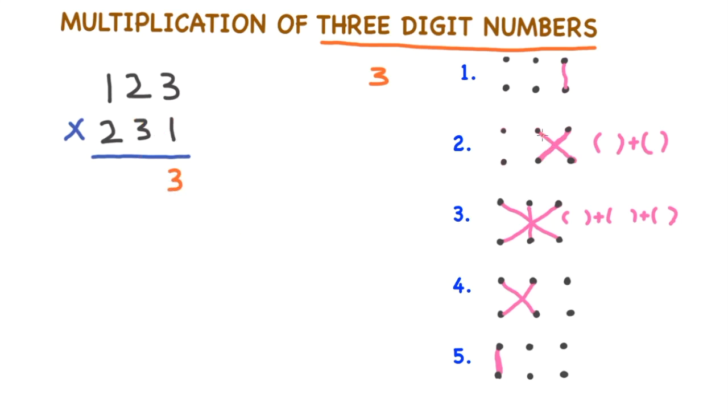Step 2: Multiply these cross elements and then add them. 2 into 1 is 2, plus 3 into 3 is 9. 2 plus 9 is 11. So 11 is a double digit number. I'll write 1 here, 1 is carry over.